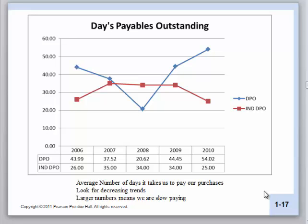Days payable — we also see that certainly over the last three years, Coors has an increasing days payable compared to the industry. This is probably indicative of their customers not paying them very quickly. It's not terribly bad — it's around 54 days — but we're paying slower than the industry, which is down below 30 days. What kind of arrangements do we have with our creditors? Are there discounts we could be taking that we're not? There are many questions to ask, and as managers and financial analysts, we would be asking them why this is true and hopefully getting answers.